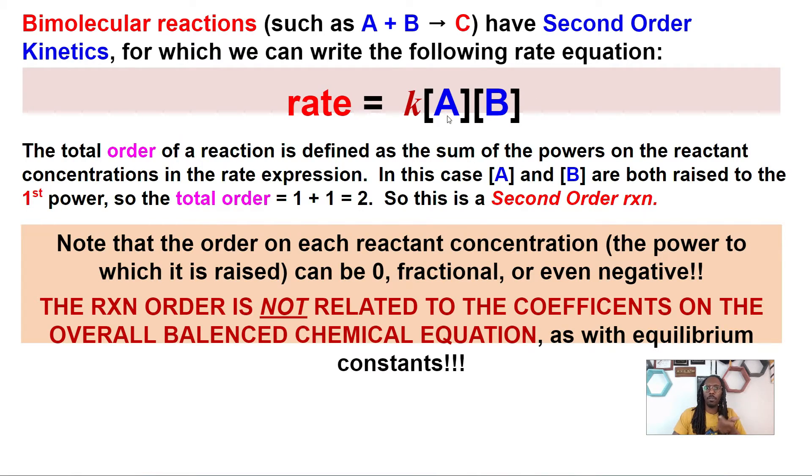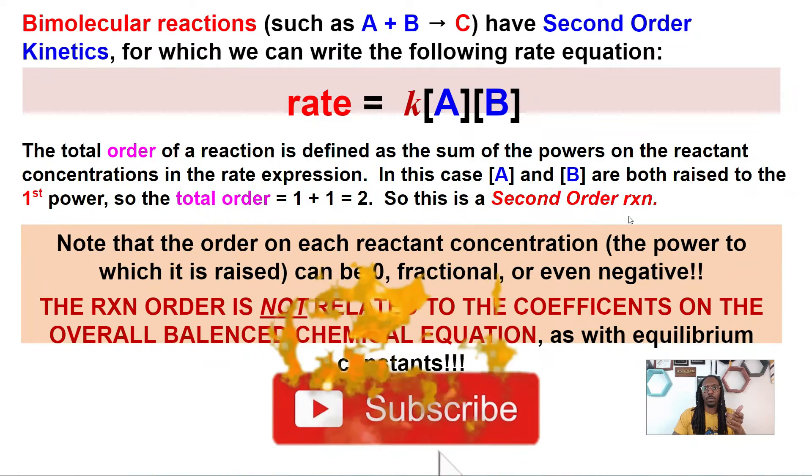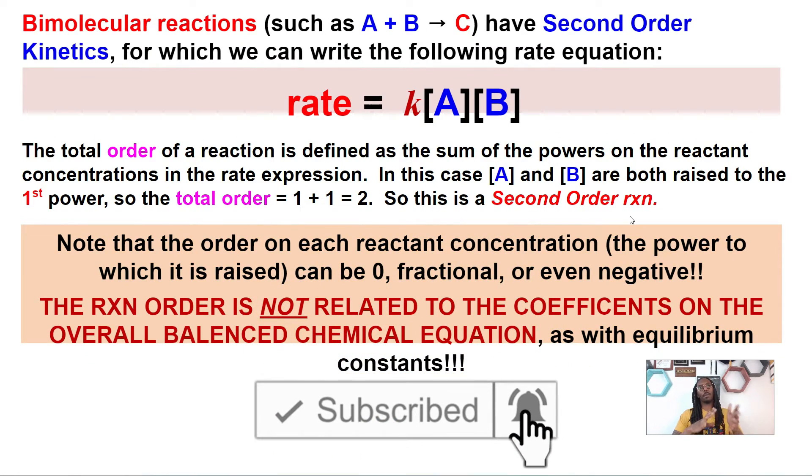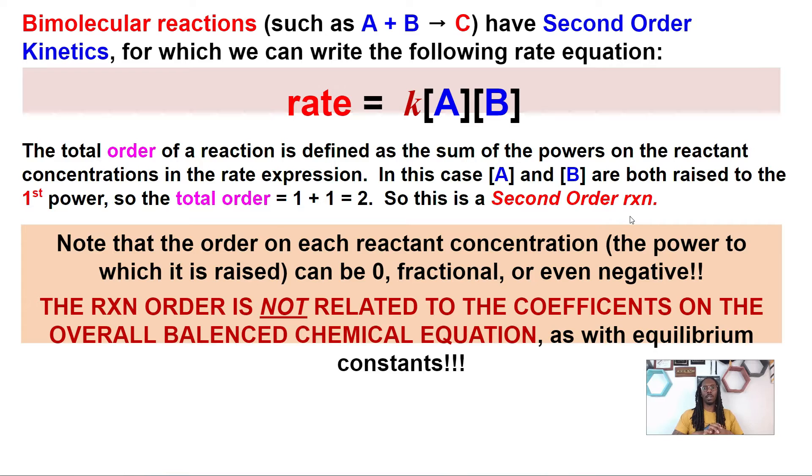So in this case, both of your reactants are first order, and therefore, for your total order of your reaction, one plus one is going to equal two here. So this is going to be our second order reaction, and this is always the case for bimolecular reactions. So that's a little hint there.